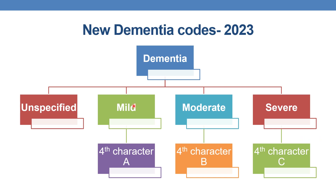For example, vascular dementia mild is indicated by F02.A — fourth character A. Whereas unspecified dementia mild is indicated by F03.A. So mild severity is indicated by fourth character A, moderate severity by fourth character B, and severe by fourth character C.